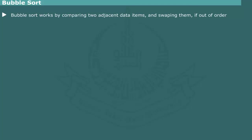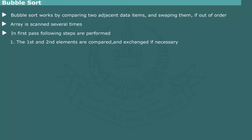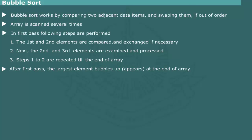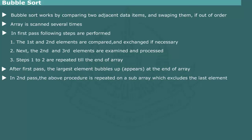Bubble Sort: Bubble Sort is the simplest of all popular sorting methods and easy to implement. It works by comparing two adjacent data items and swapping them, if necessary, to bring them in proper order. Usually the array is scanned several times. During the first pass, the first and second elements are compared; if out of order, they are exchanged. Then the second and third elements are examined and swapped if necessary. This process is repeated until the end of the array is reached. As a result of the first pass, the largest element bubbles up to the end of the array. Passes are performed until the sub-array is reduced to a single element.